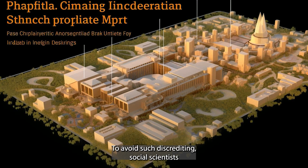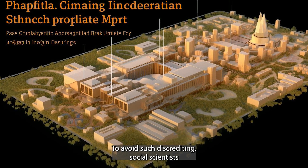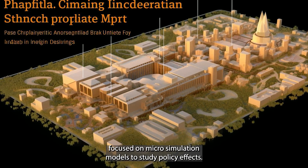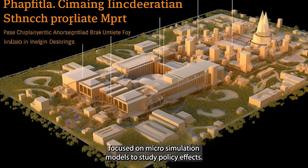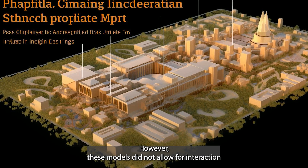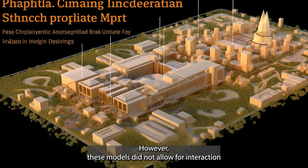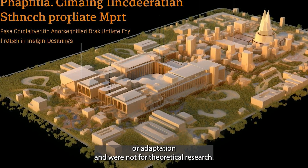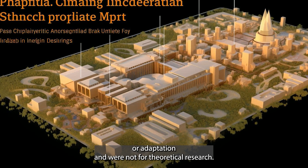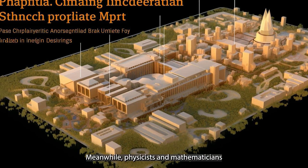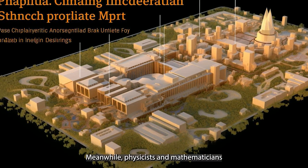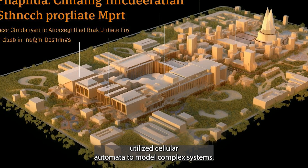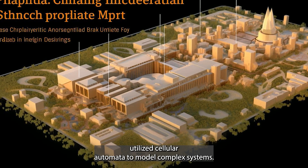To avoid such discrediting, social scientists focused on microsimulation models to study policy effects. However, these models did not allow for interaction or adaptation and were not for theoretical research. Meanwhile, physicists and mathematicians utilized cellular automata to model complex systems.